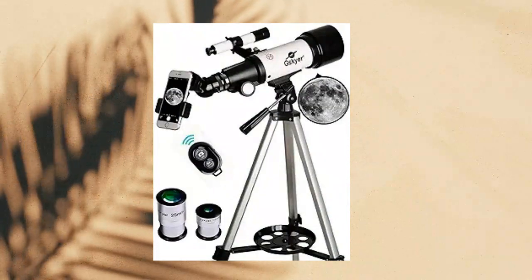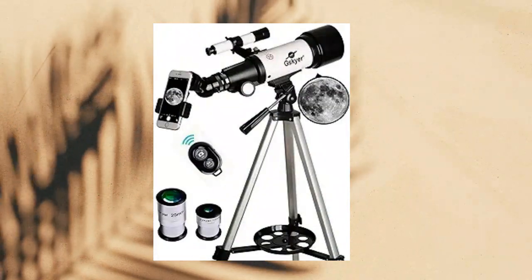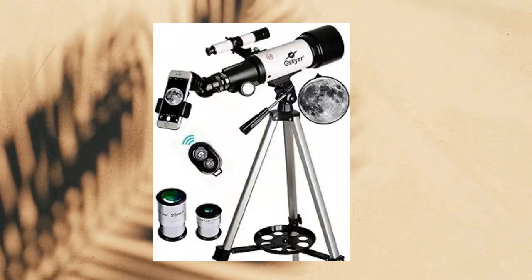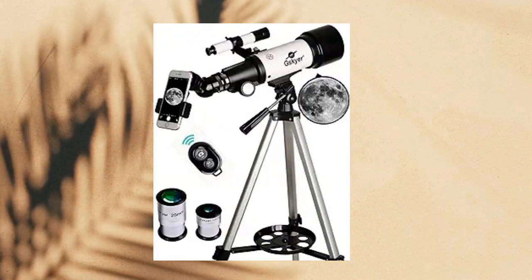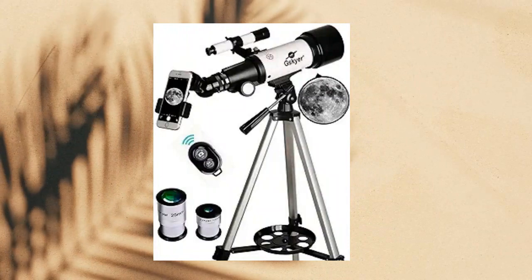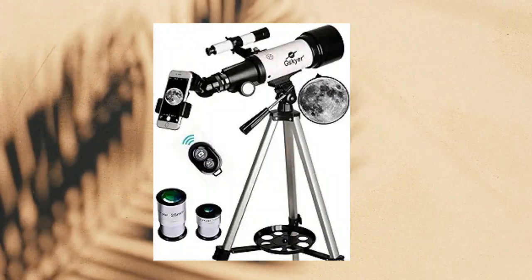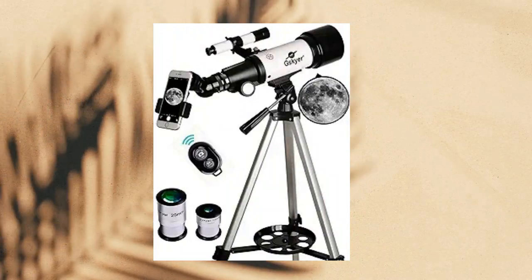Skyer Telescope. Unlock the wonders of the cosmos with our quality 70mm Aperture Telescope. Its 400mm focal length and fully coated optics glass lens create stunning, high-transmission images while protecting your eyes. Perfect for stargazing, it comes with two eyepieces and a 3x Barlow lens to triple magnification. The 5x24 finder scope simplifies object location.